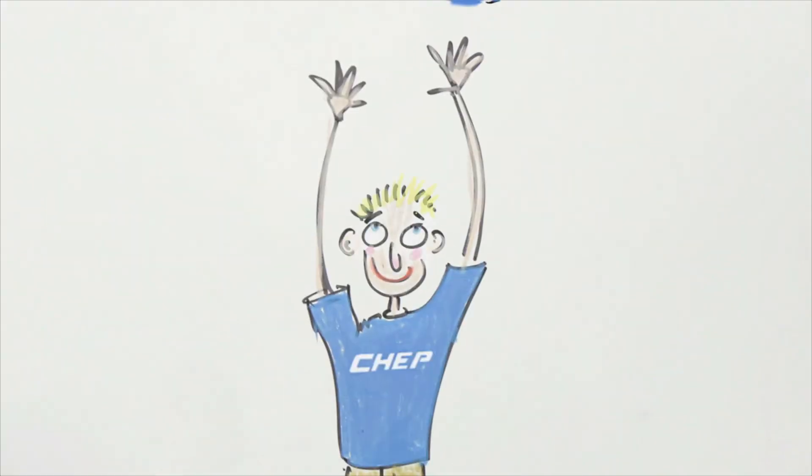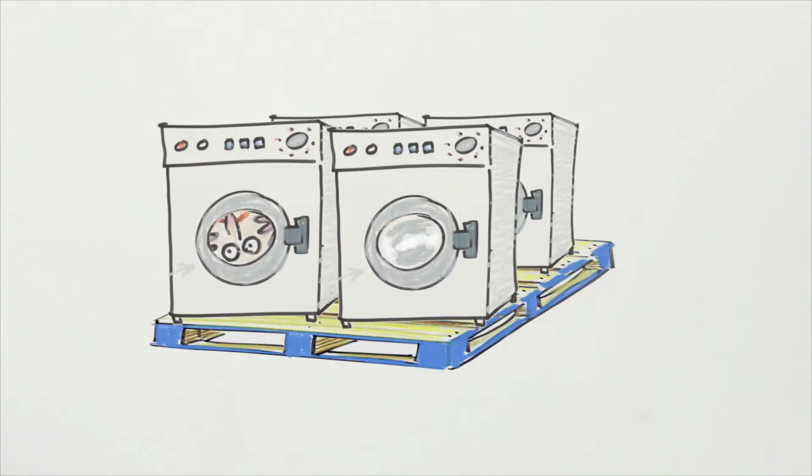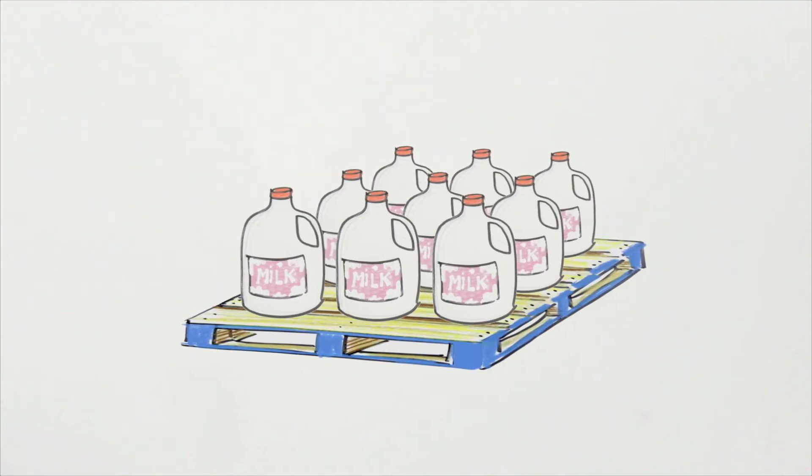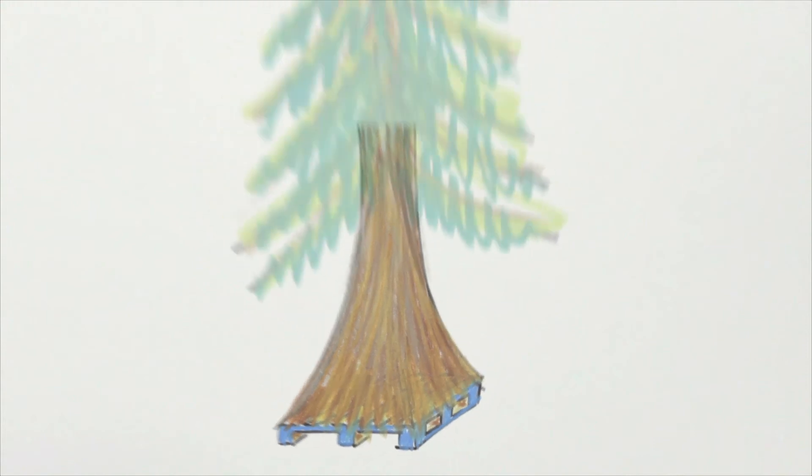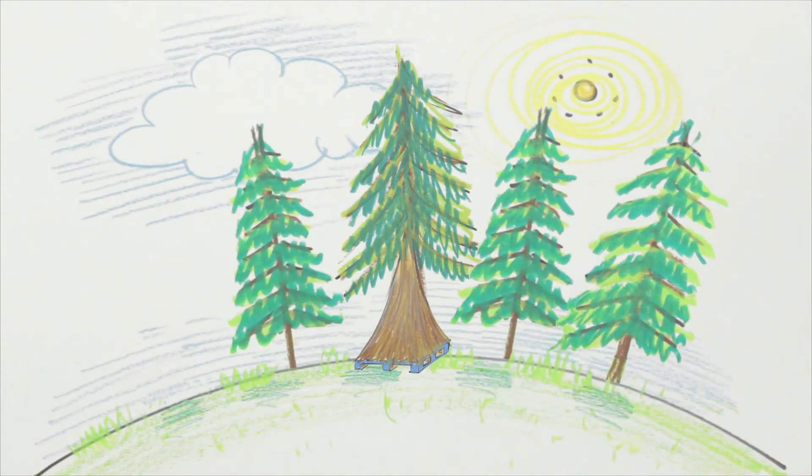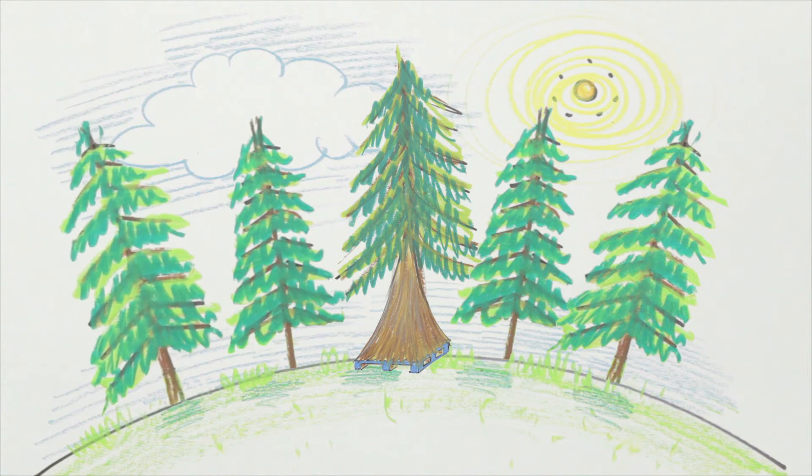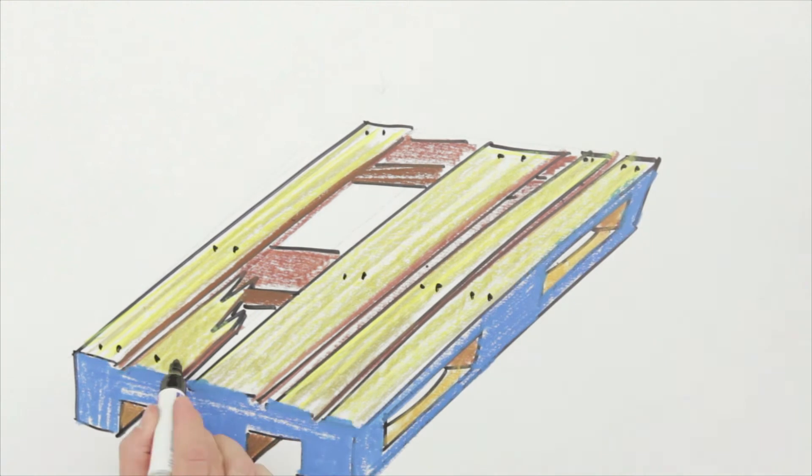At CHEP we are real experts in the pallet business. Pallets move all kinds of goods around the world. Most of our pallets are made out of wood. We try to make sure that it all comes from sustainable forests, ensuring reforestation. And when a pallet is damaged, we repair it so our pallet is ready to be used again.